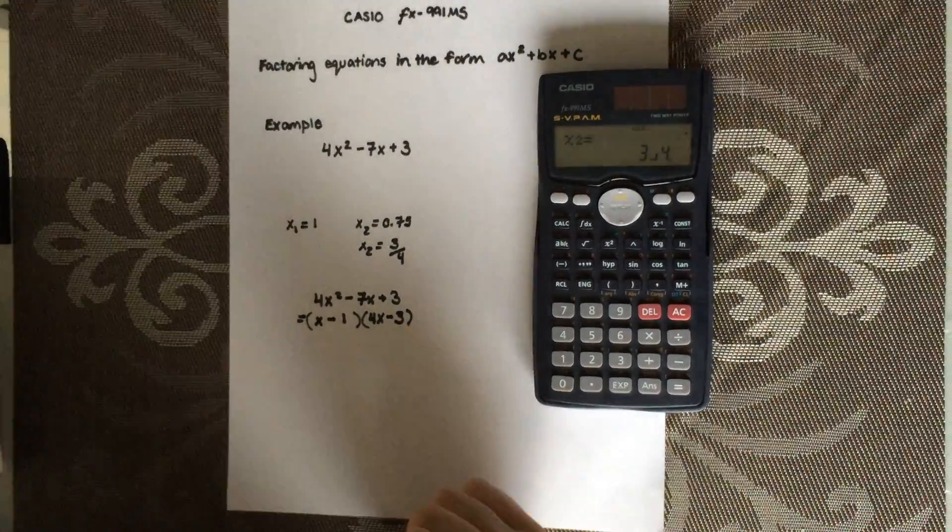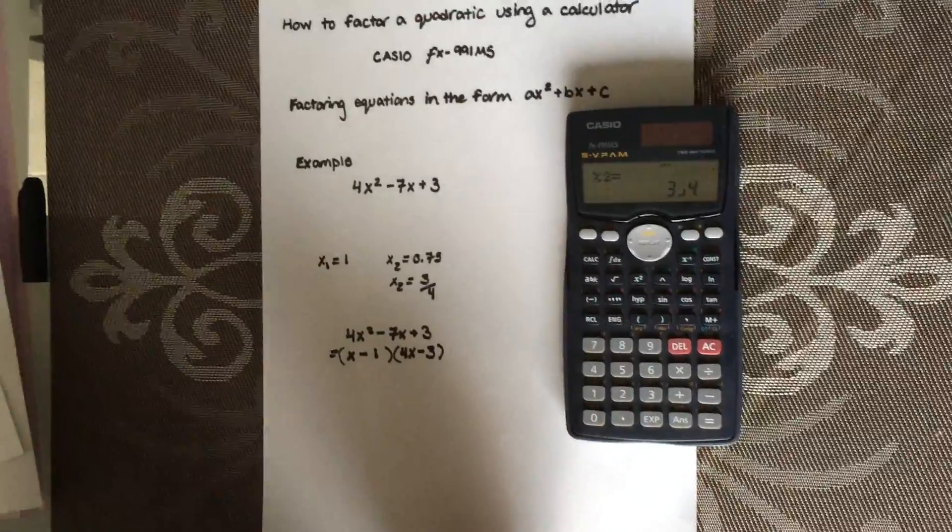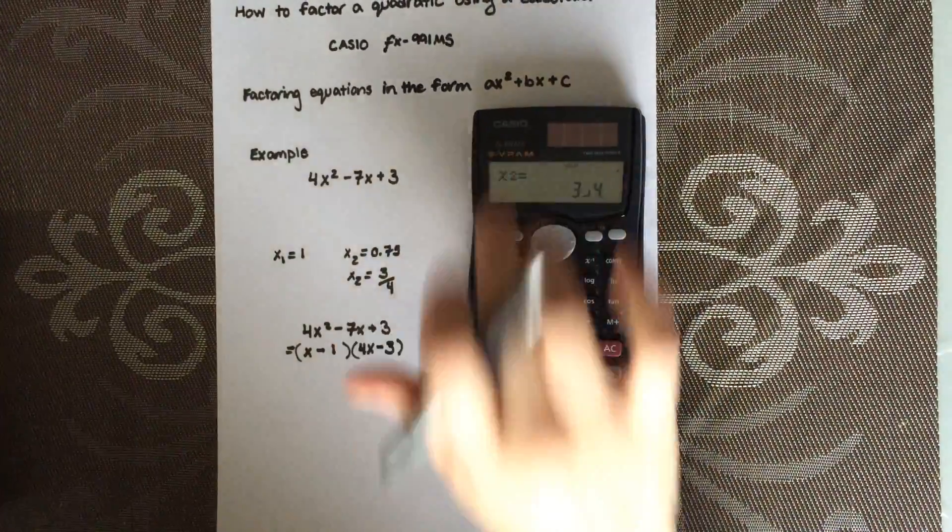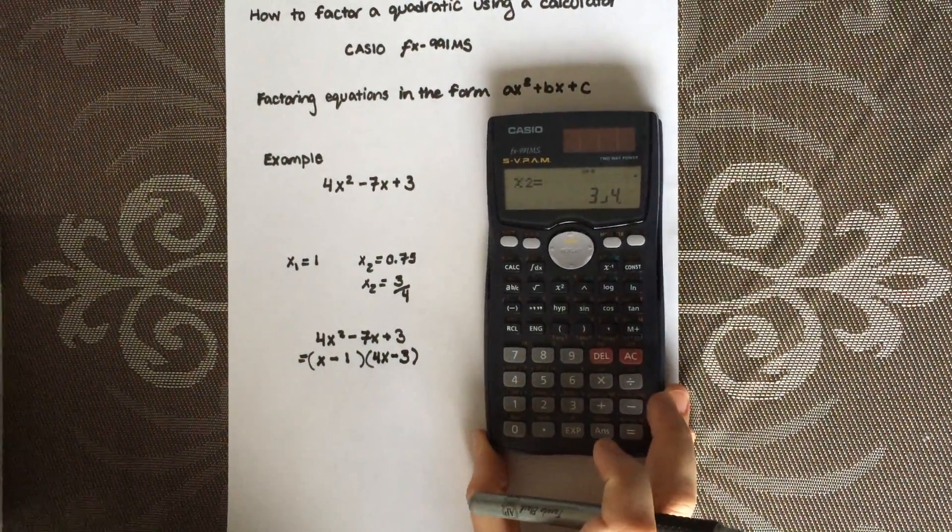You factor 4X squared minus 7X plus 3 using your Casio FX 991MS.